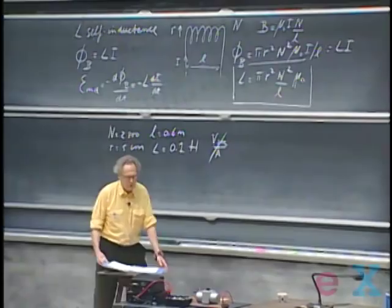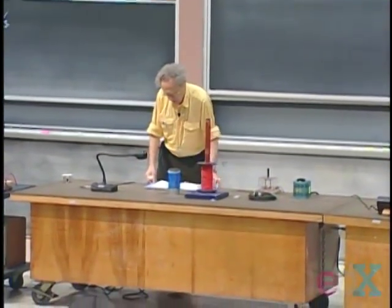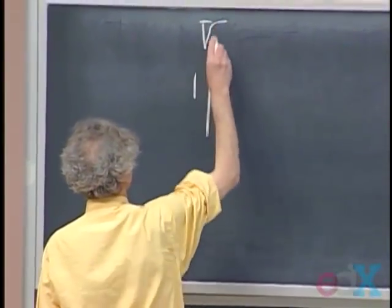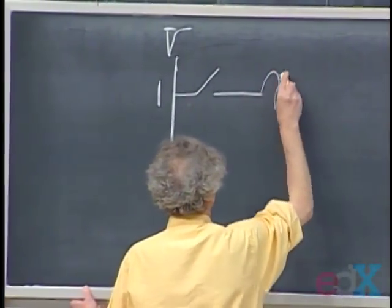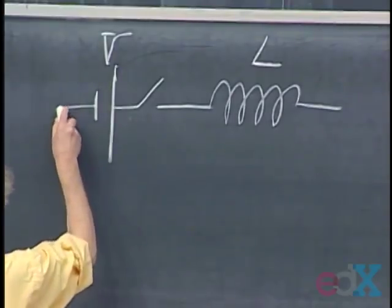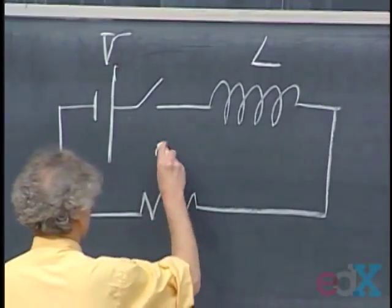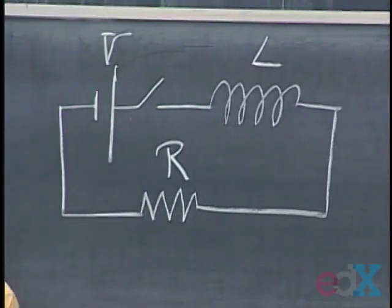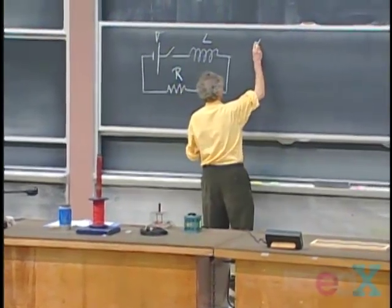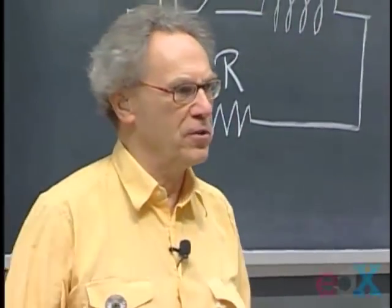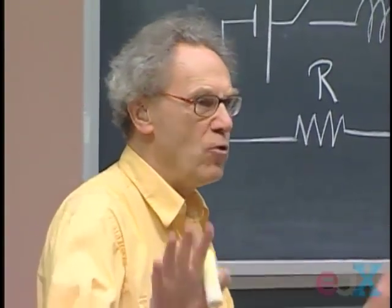Now I want to show you the remarkable consequences of the presence of a self-inductor in a circuit. I have a battery with EMF V, a switch, a self-inductor (always drawn with coils), and in series a resistor. I close this switch when there is no current running — at time t=0 there is no current. When I close the switch, the current wants to increase, but the self-inductor says 'take it easy' — Lenz's law — fighting the current that wants to go through it.